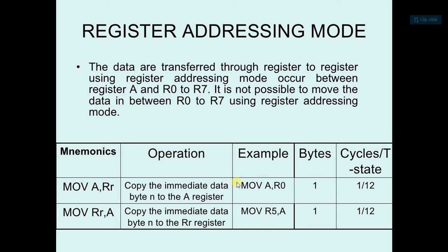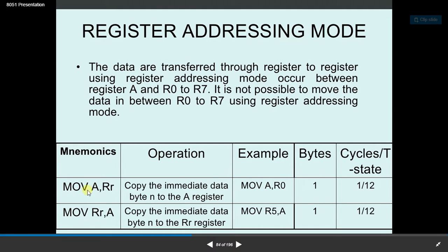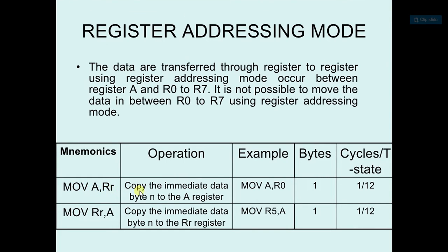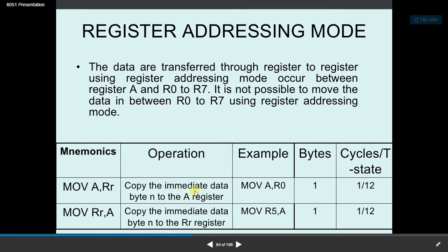In that mode, the data is provided in the instruction itself with a hashtag. So in this mode, see here MOV A,Rr. What it will do is copy the immediate data byte to the A register.